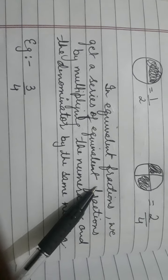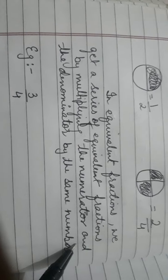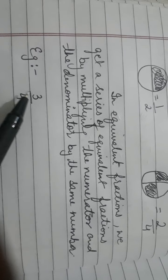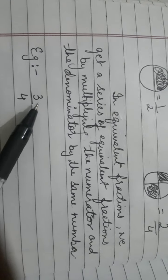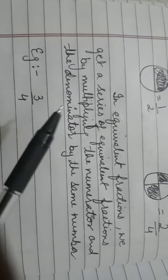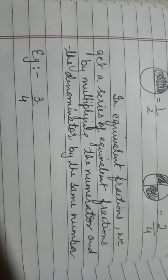Now let us see further that in equivalent fractions we get a series of equivalent fractions by multiplying the numerator and the denominator by the same number. It means the number by which we multiply the numerator, we must multiply the denominator by that same number also.